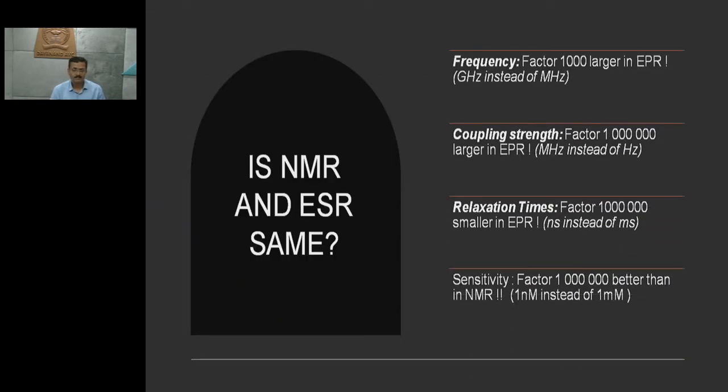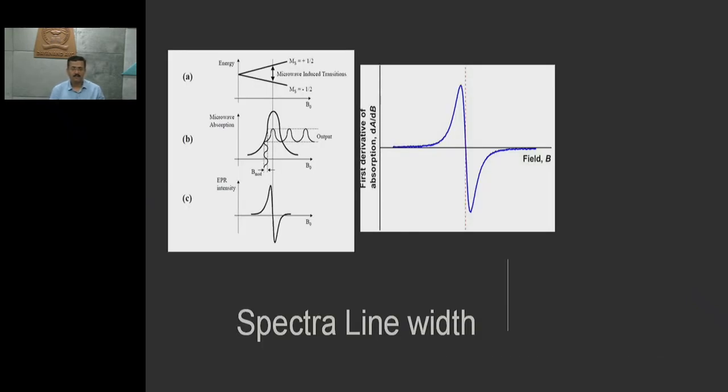Again the question arises: in some extent it is the same, but to a major extent it is different. In which extent is it different? The frequency factor in EPR is 1000 times larger - in gigahertz rather than megahertz in NMR. Coupling strength is 10 million times larger in EPR instead of NMR. Relaxation time is also 10 million times smaller in EPR - in nanoseconds compared to milliseconds in NMR. Regarding the sensitivity factor, it is much more sensitive than any NMR instrument.